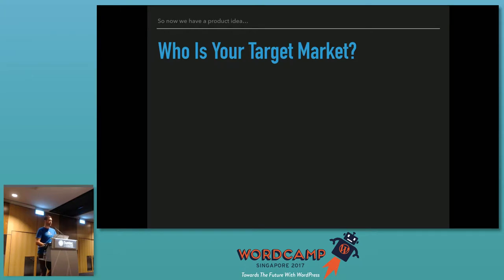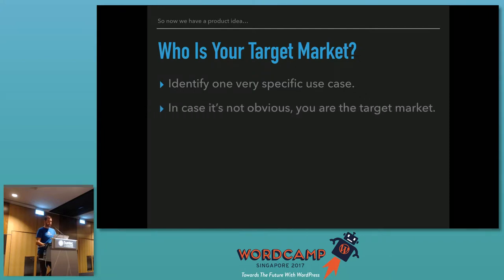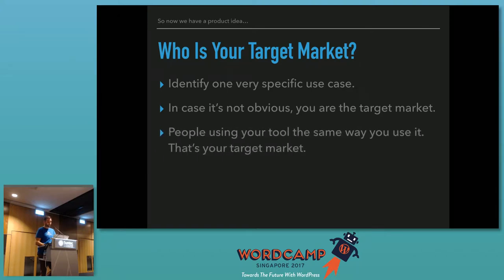Now that you have an idea for what you want to build, the question is: who are you going to build it for? Who's your target market? The easy way to do this is to identify a very specific use case — like one feature basically that you want to build. For us it was product demos. And in case it's not obvious, you're the target market. Whatever you're using this for, just build it for you. Other people like you will be the ones you're going to market it to. People using your tool the same way you use it — that's your target market in the beginning.